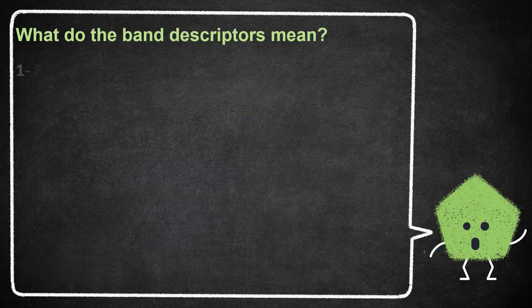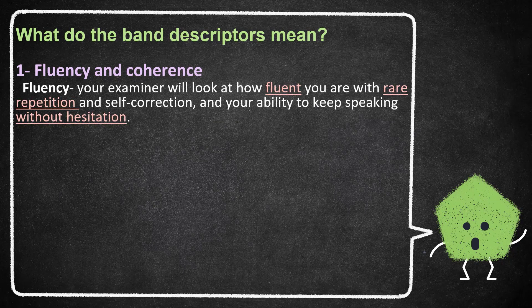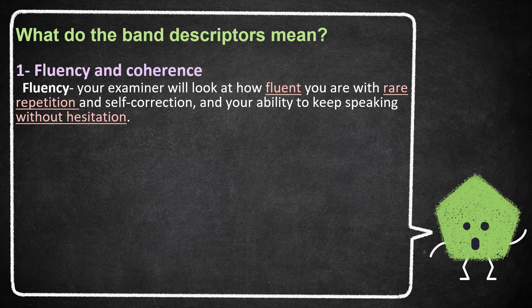For the first descriptor, fluency and coherence. The examiner checks your fluency, which means you speak fluently with rare repetition and self-correction, and your ability to keep speaking without hesitation. And I have a video on how to speak fluently using four simple ways to stretch your answer. I'll leave you the link in the description box.